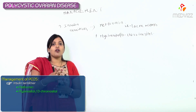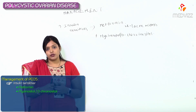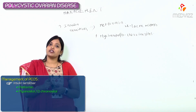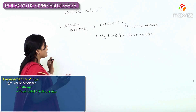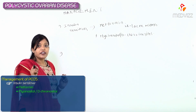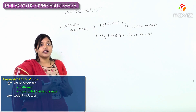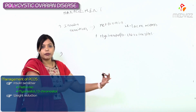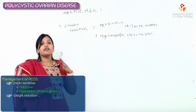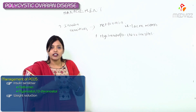The next villain is estrone, which is being abundantly converted in fat. So in management, we want to cut down that fat. To be frank, the first thing we advise all patients is weight reduction. The peripheral conversion was occurring in adipose tissues where increased estrone causes a positive LH feedback cycle. You need to decrease this conversion by cutting down the fat cells.